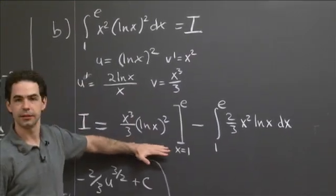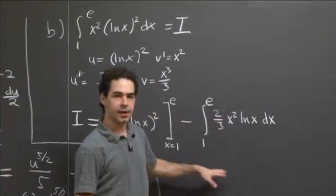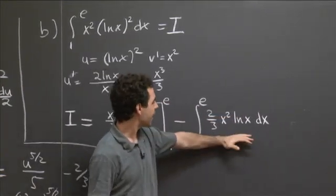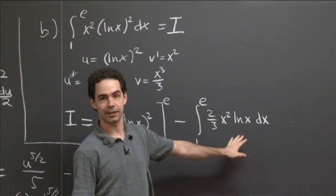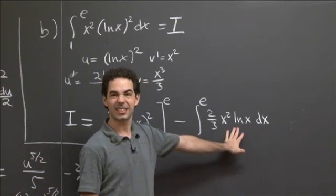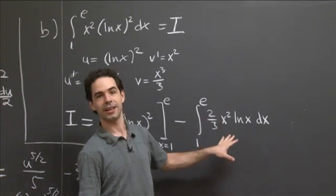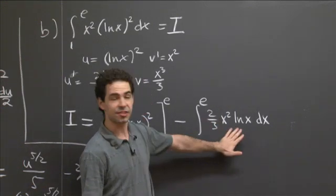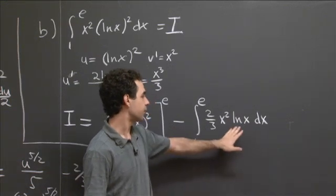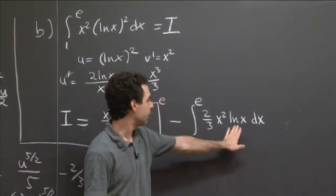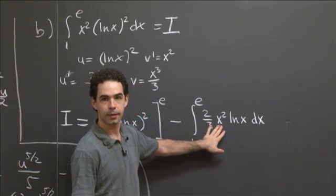This first part will evaluate to a constant — we plug in e and 1 and take the difference. This remaining integral is still not immediately obvious, but it's definitely simpler than what we started with: before we had x squared ln x squared, and here we just have x squared ln x. It's still in a form where we can do integration by parts again. The natural thing to do would be very similar — we take u to be ln x and v prime to be x squared.